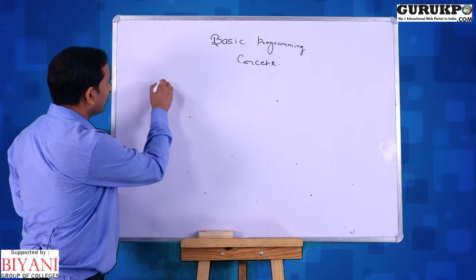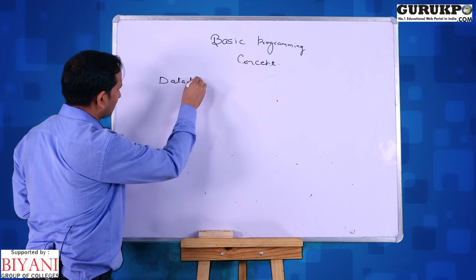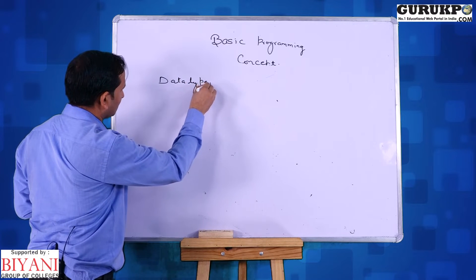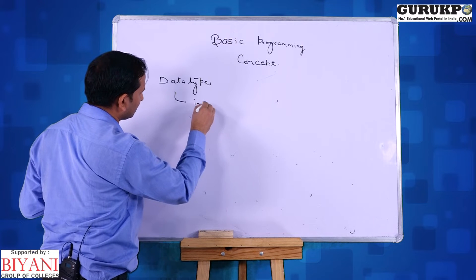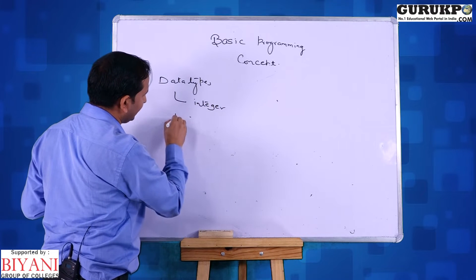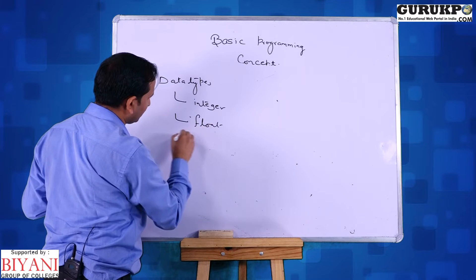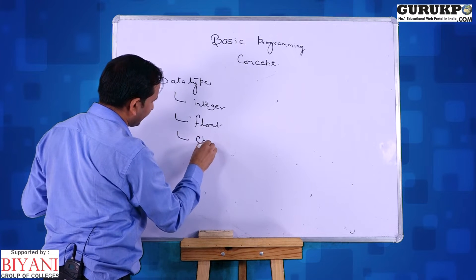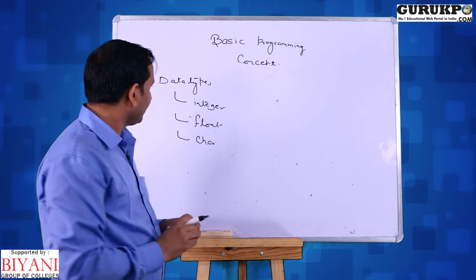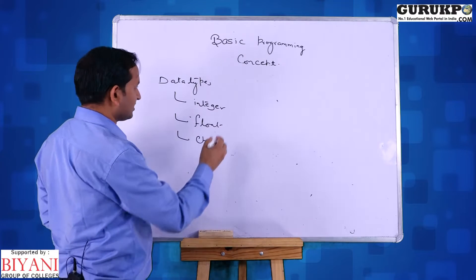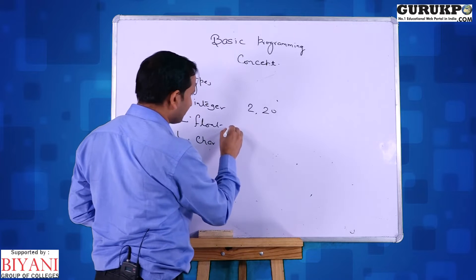Now we are discussing primary data types. It includes integer, float, and character — these are the three primary data types. Integer means without decimal; for example, 2 and 20 are called integer data types.